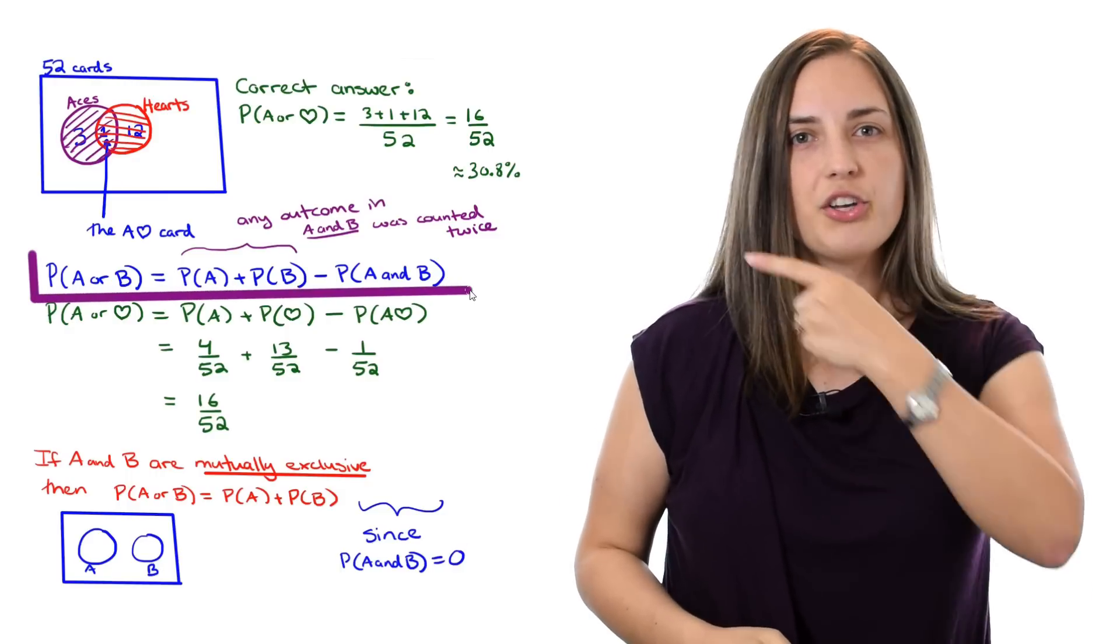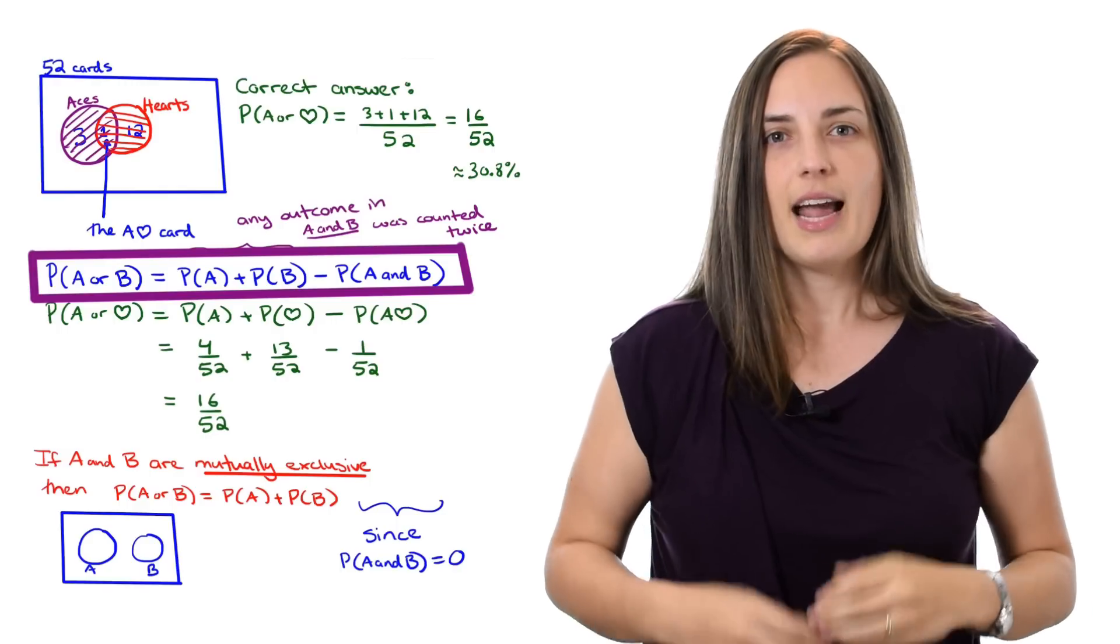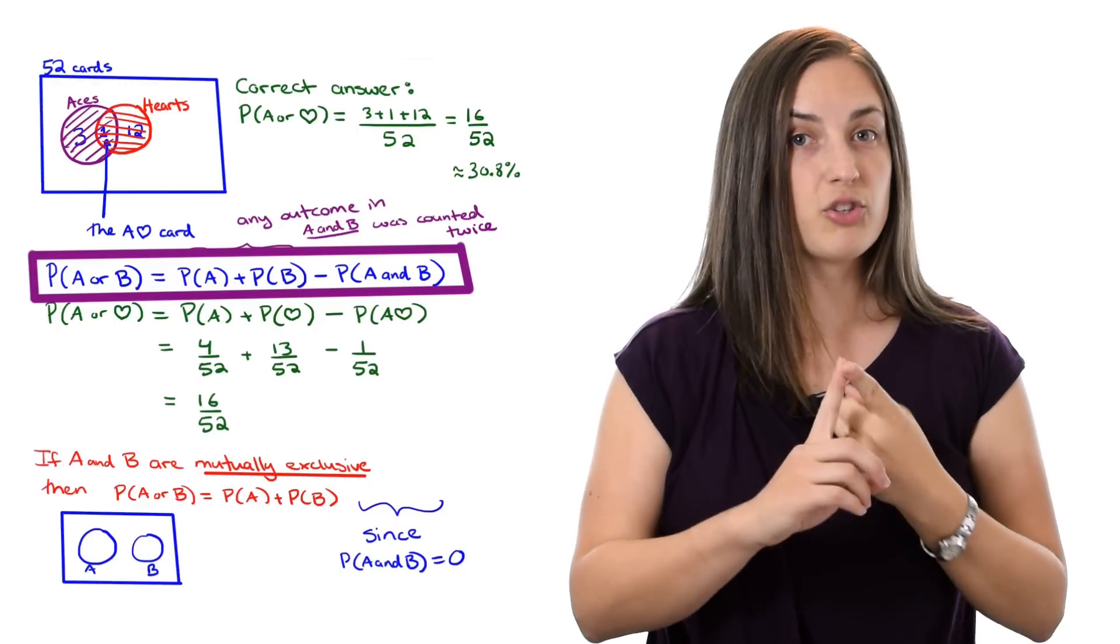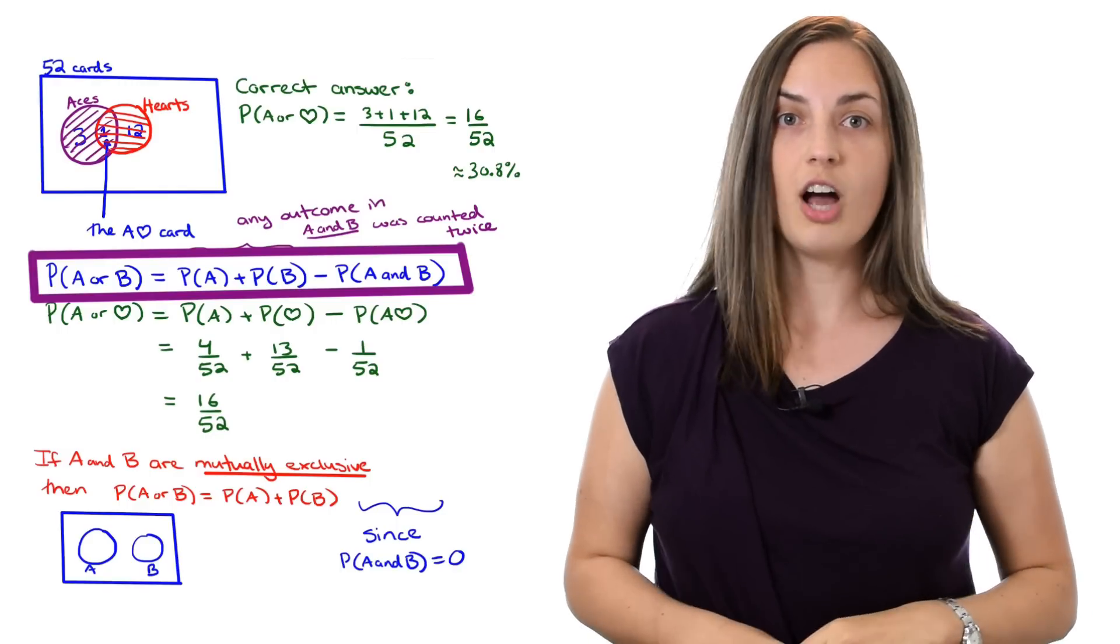So in general, all you need to remember is the big equation in the purple box. And that tells you how to deal with either mutually exclusive events or events that are not mutually exclusive.